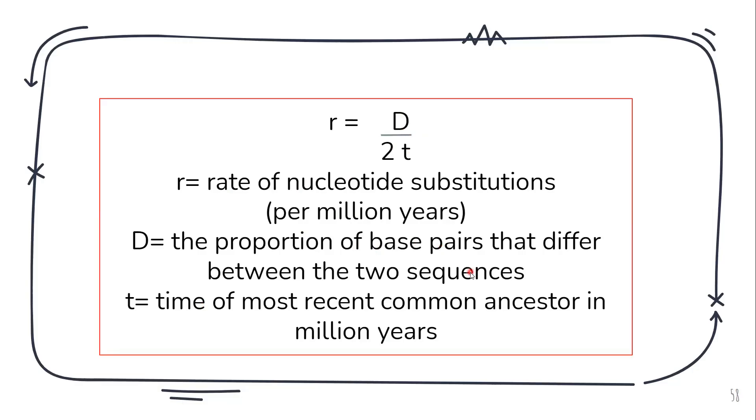For example, the sequence of ape and man. So how many base pairs differ between the two? That is d. What is t?